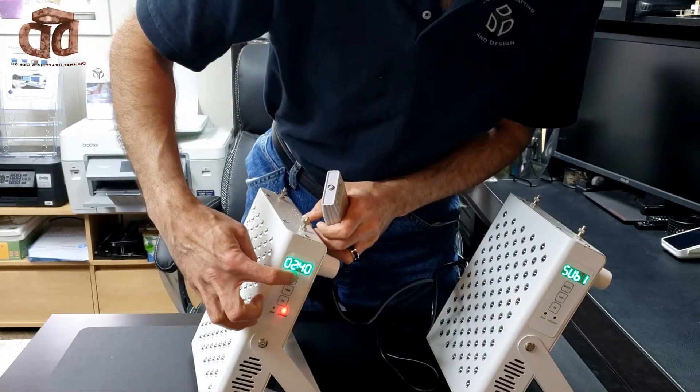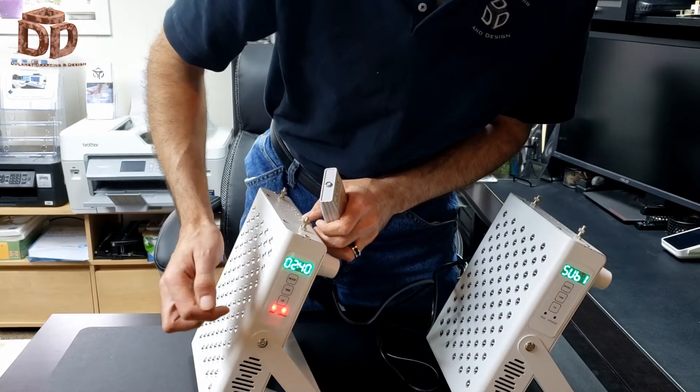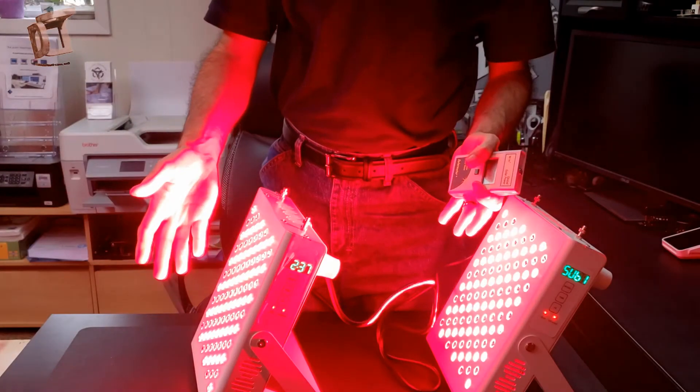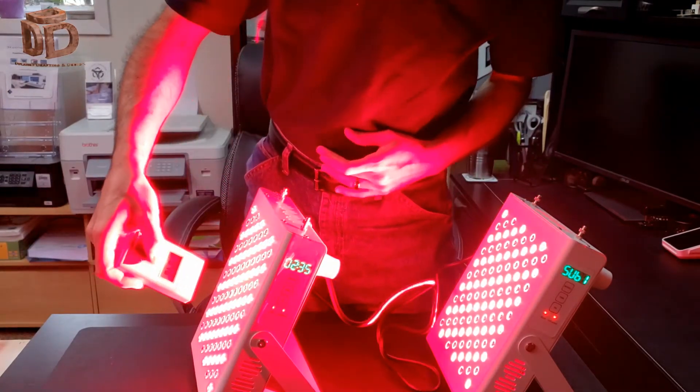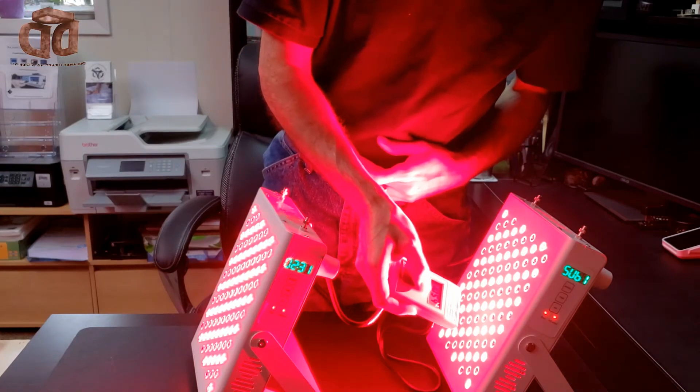I'm going to hit mode and now we have both on. I'm going to hit OK for red and infrared and you can see the red light on both panels and here's the infrared coming out of both panels.